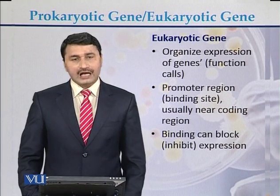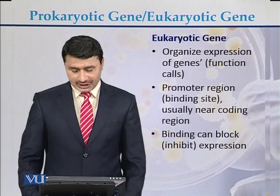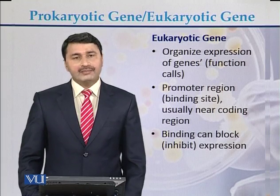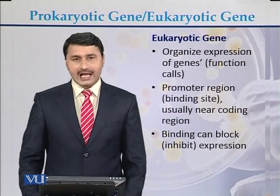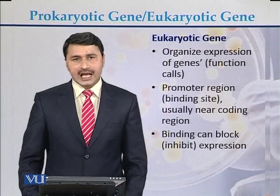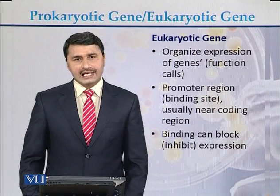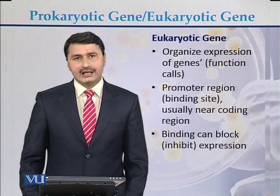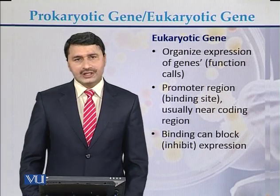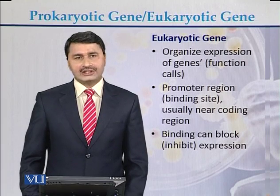Eukaryotic genes have organized expression. Promoter regions have binding sites near the coding region, and binding can block or inhibit expression. There are also sequences near the binding site that sometimes enhance expression. These molecules are called silencers and enhancers — enhancers increase expression, while silencers stop expression.